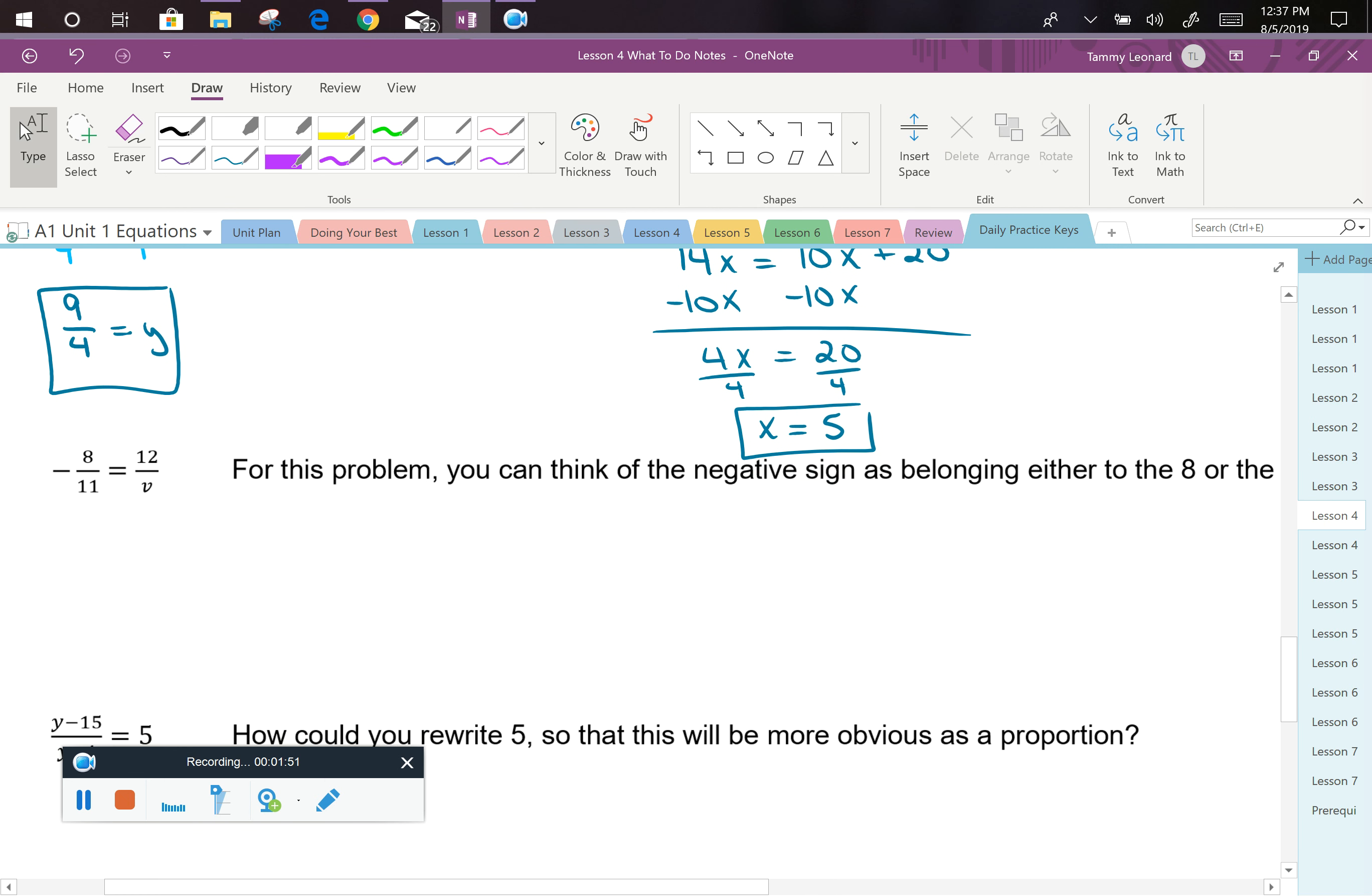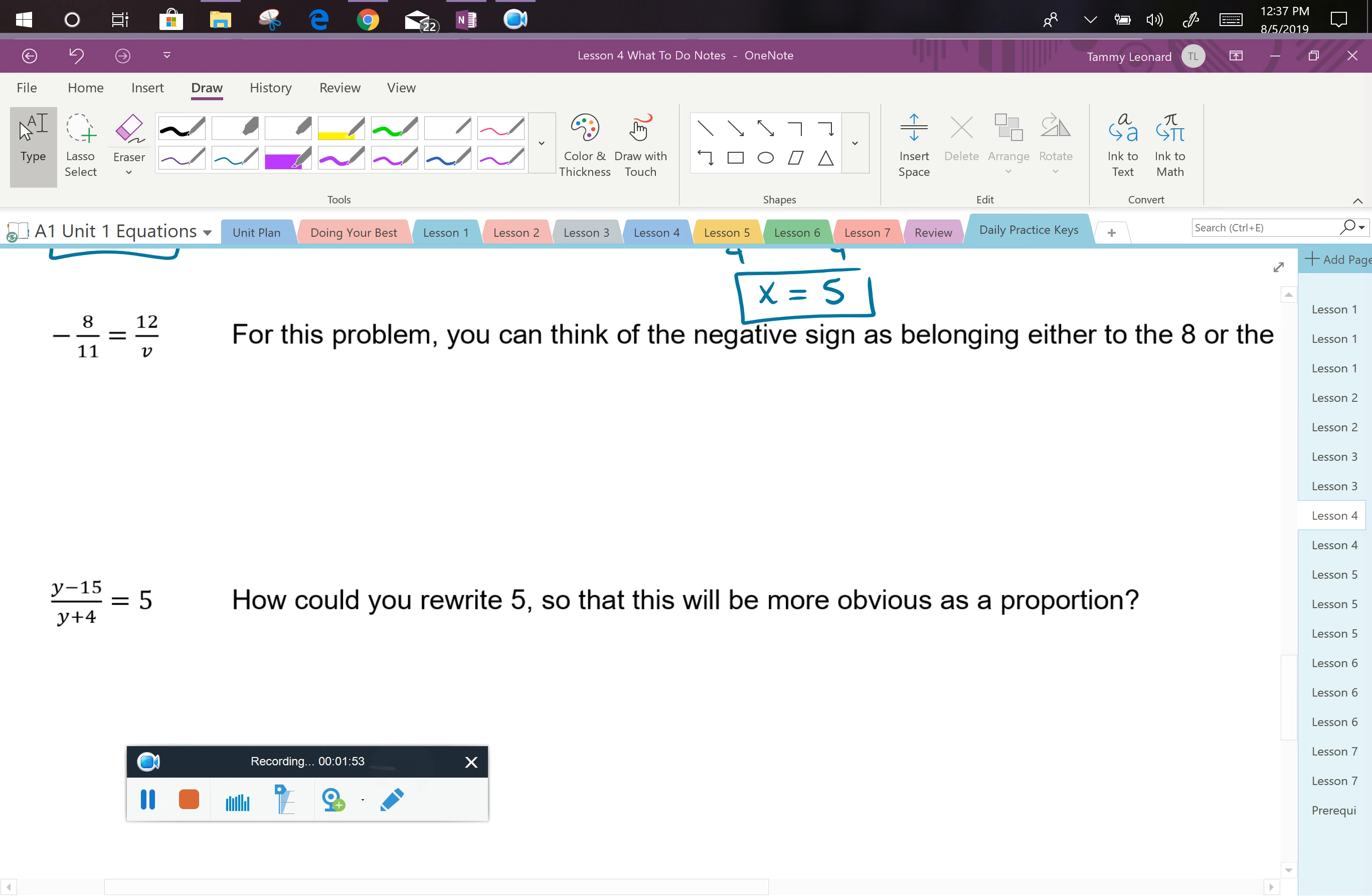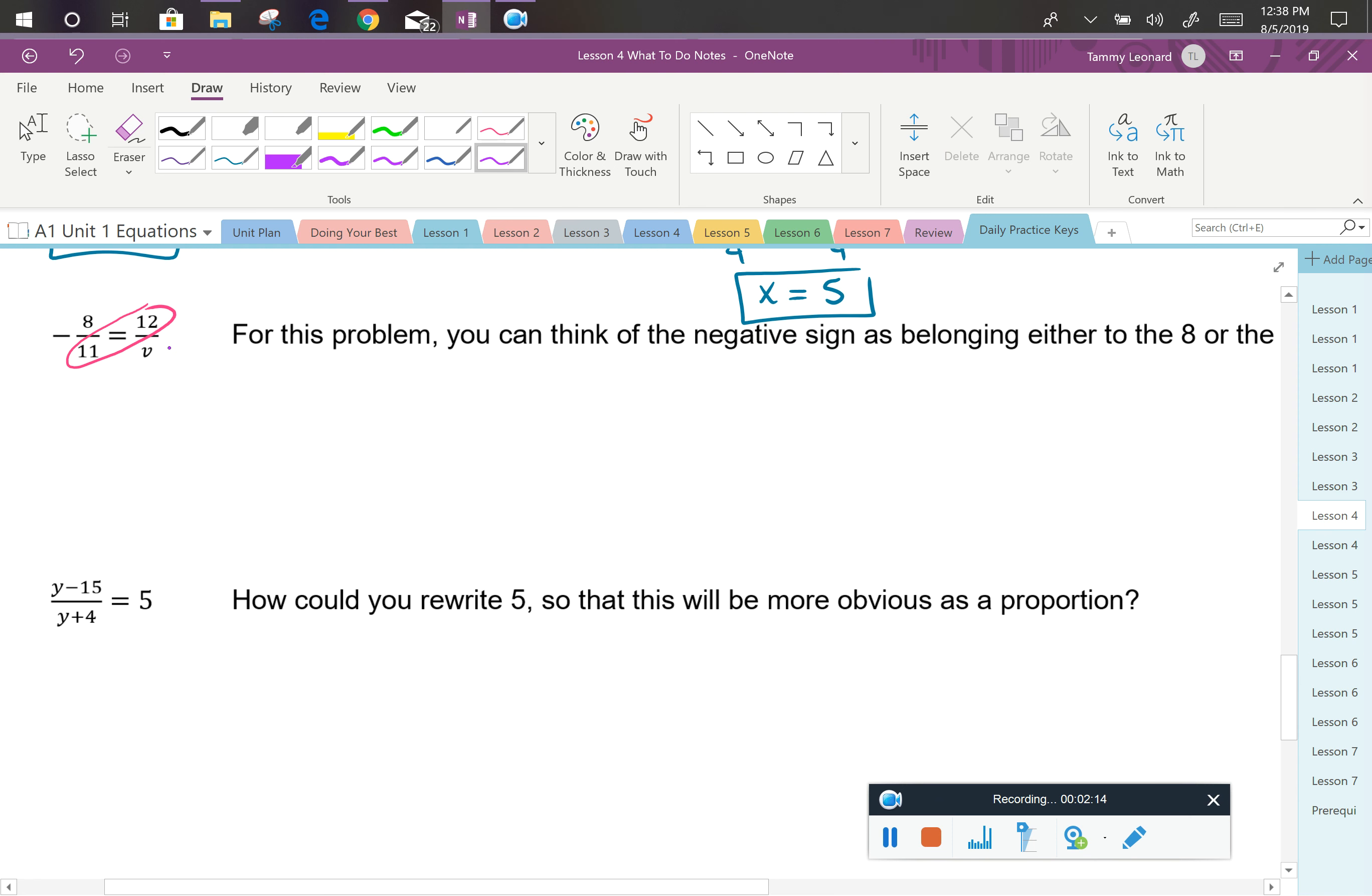In this next problem, sometimes students get a little bit thrown off by that negative sign. So we want to take a look and realize there is only one negative on the left side of the problem. You can choose to see that negative as belonging to the 8, or you can choose to see the negative as belonging to the 11. It doesn't matter as long as you pick one and stick with it. I'm going to choose to see the negative as belonging to the 8. If you made a different choice, that's okay. We'll get the same answers in the end.